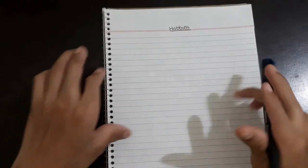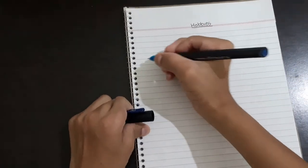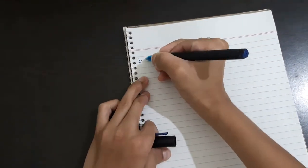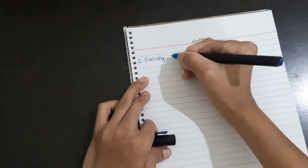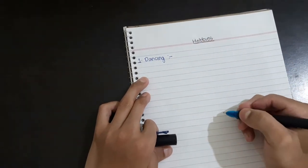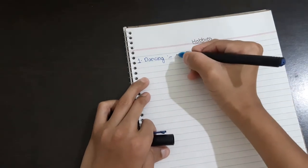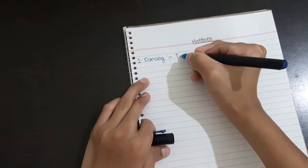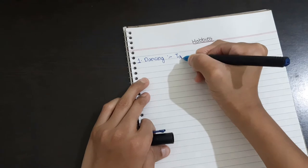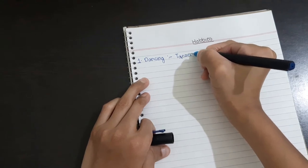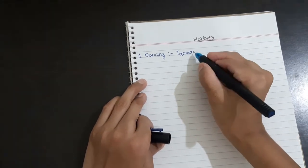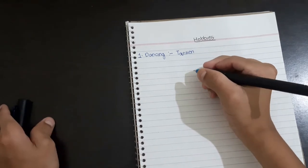So first is dancing. Now we will write it in German. Tanzen. The spelling of Tanzen is T-A-N-Z-E-N.